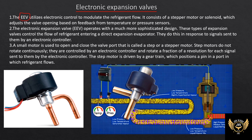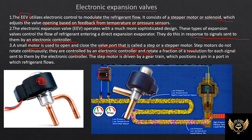Next, like the thermal expansion valve, we have the electronic expansion valve. This valve uses an algorithm and can operate automatically to meet temperature requirements. It uses a stepper motor driven by electronic control signals. The stepper motor controls the valve opening based on temperature and pressure sensing, regulating the amount of refrigerant. In the system there is a liquid line and a vapor line from the condenser through the expansion valve.